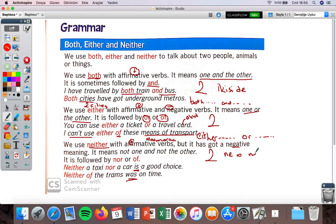It means not one and not the other. Again we talk about two things - neither this nor that. It is followed by 'nor' or 'of'. Usually we use neither with 'nor': neither blah blah blah nor blah blah blah. Neither you nor your sister. Neither a taxi nor a car is a good choice. You can also use it with 'of': neither of the trams was on time. We're talking about two trams and neither of them was on time.